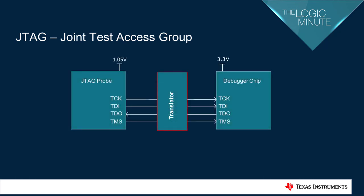When the JTAG port and the debugger chip operate at different voltage levels, a level shifter is required to shift the IO signal voltage to enable the two devices to communicate. There are multiple TI level shifter solutions that can be considered for JTAG level shifting.